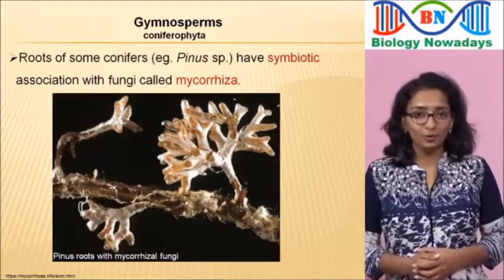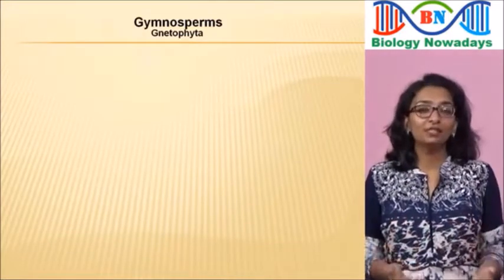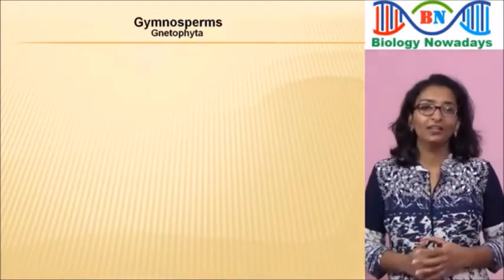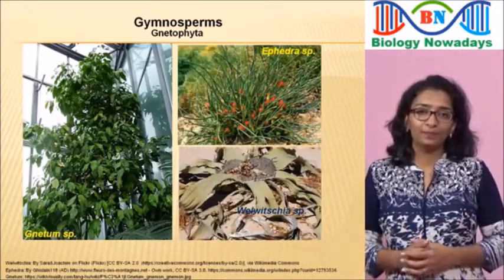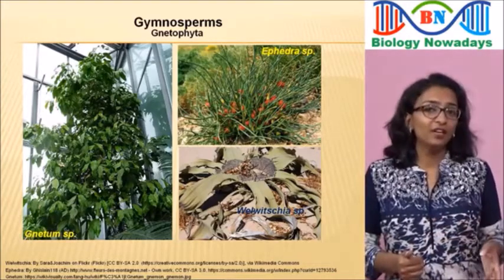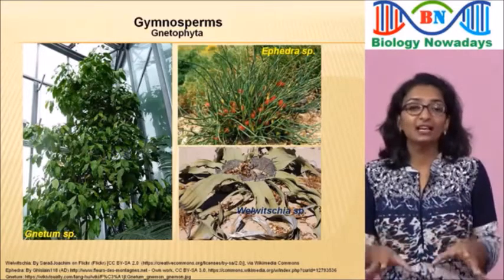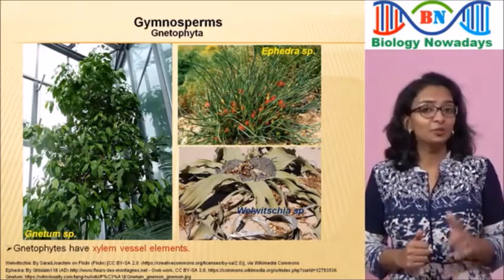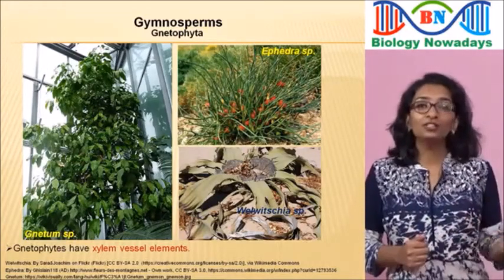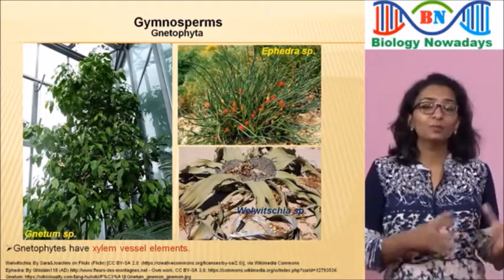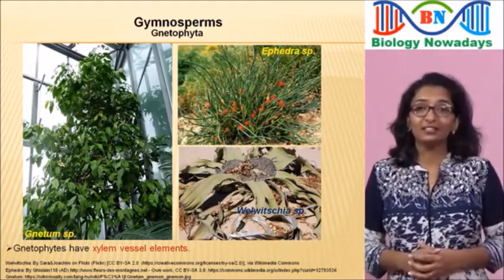The fourth group is Gnetophyta. Its members belong to three main genera: Gnetum, Ephedra, and Welwitschia. The primary difference between gnetophytes and other gymnosperms is that gnetophytes have vessel elements similar to those found in angiosperms. Because of this, gnetophytes were once thought to be the closest gymnosperm relatives of angiosperms. However, molecular studies showed that this is wrong.